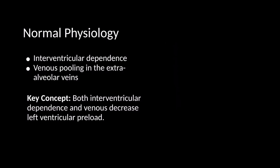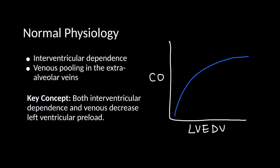Let's summarize what we've learned so far about the normal change in systolic blood pressure with inspiration. First, during inspiration, the right ventricle expands and intraventricular dependence causes decreased left ventricular filling. Second, expansion of the lungs during inspiration leads to venous pooling in the pulmonary vasculature, and this leads to decreased left ventricular preload. Both processes result in a decrease in the left ventricular end diastolic volume. Looking at the Starling curve, a decrease in the left ventricular end diastolic volume has the potential to change cardiac output if you are on the steep part of the curve. Under normal circumstances, however, we live on the flat part of the Starling curve, so the reduction in LV end diastolic volume during inspiration only results in a minimal change in cardiac output and systolic blood pressure. However, when a pericardial effusion is present, this physiology is exaggerated and can result in a pulsus paradoxus.